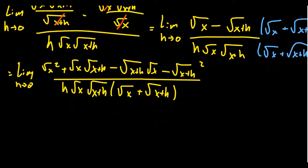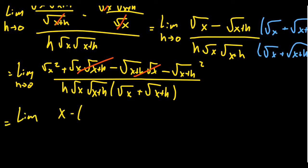The square root of x times the square root of x plus h and the square root of x plus h times the square root of x are the same — one is positive and one is negative, so they cancel. The square root of x squared becomes x, and the square root of x plus h squared becomes x plus h. Pay attention to the signs: you get x minus x plus h, all over the massive denominator, taking the limit as h goes to 0.